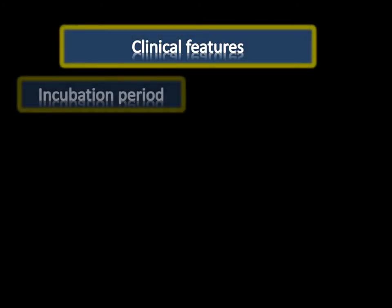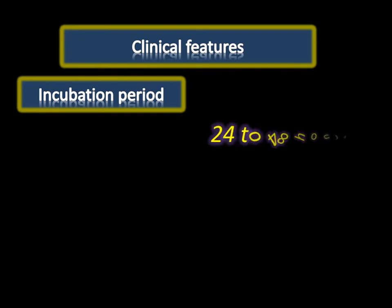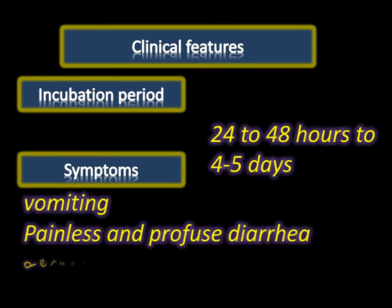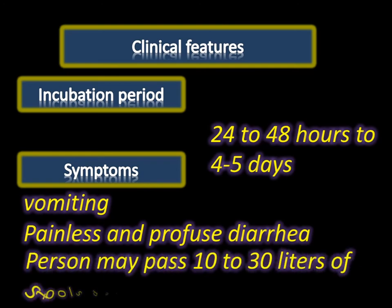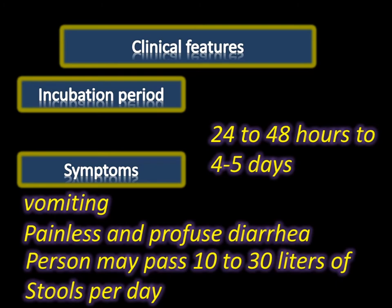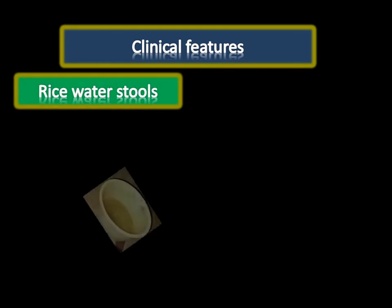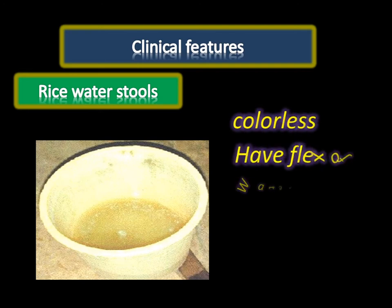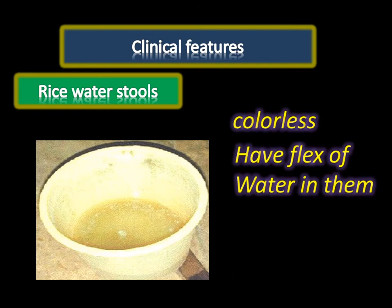The incubation period is as short as 24 to 48 hours, or 4 to 5 days. Symptoms begin with sudden onset of nausea, vomiting, and profuse watery diarrhea. There is no abdominal pain; cramps and discomfort are felt, but diarrhea is effortless and painless. The person may pass 10 to 30 liters of watery stools per day. The stool in cholera is called rice water stool, which is a colorless fluid with flecks of mucus. If not treated, water loss is very high.